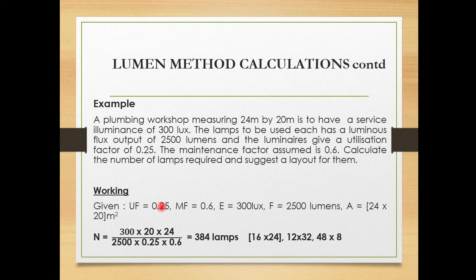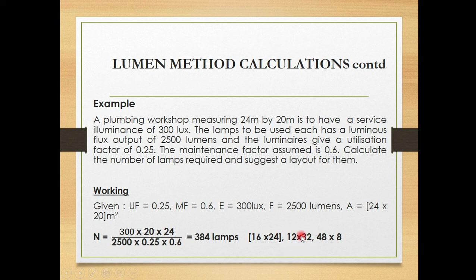Since we need to suggest a layout, one possible arrangement is 16 by 24. For a workshop measuring 20 meters by 24 meters, it is better to have more lamps along the longer dimension, so 24 lamps in the rows and 16 in the columns. Another option is 12 by 32, but that would make the column spacing too tight, so 16 by 24 is preferred.